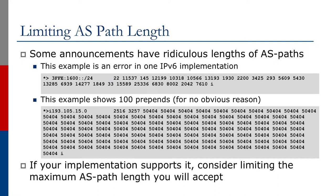If your implementation supports it, consider limiting the maximum ASPath length you will accept. This can be done using the command: neighbor [IP address of the peer] max-as-limit [number that you want to limit it to].